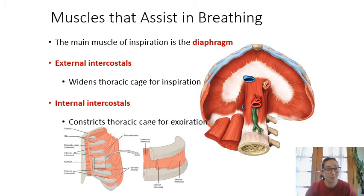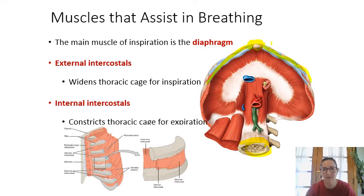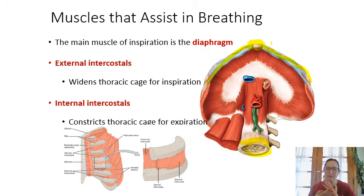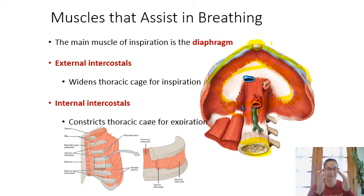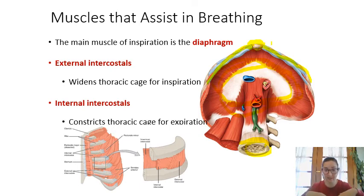The muscles used for breathing: the prime mover is the diaphragm — a huge sheet of thin muscle separating the thoracic cavity from the abdominal cavity. When relaxed, it's dome-shaped; when contracted, it flattens. A relaxed diaphragm means you're exhaling; a contracted diaphragm means you're inhaling. The intercostal muscles sit between the ribs: external intercostals are important for inspiration, and internal intercostals for expiration.